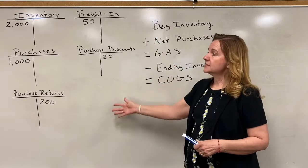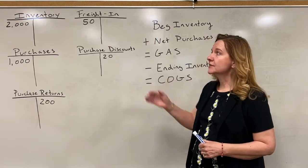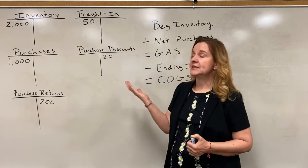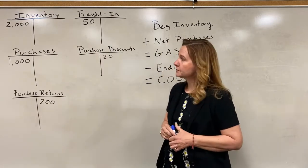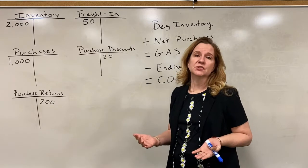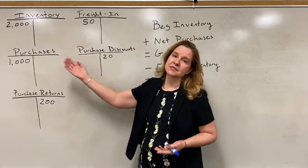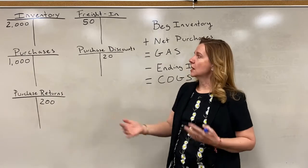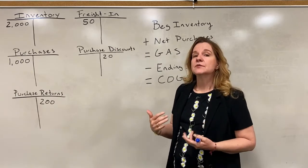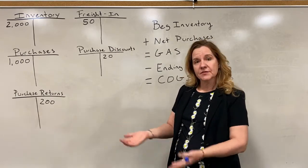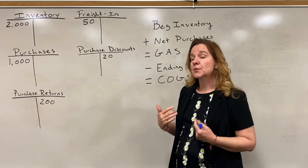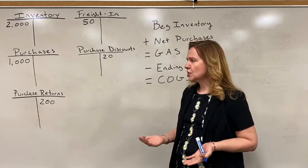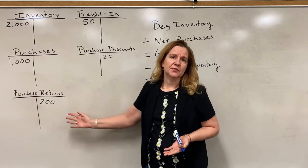We're going to look at a general ledger using T-accounts. We have an inventory account with a $2,000 balance — that's the beginning balance because it hasn't been adjusted. During the year when we're purchasing inventory, we put it to a purchases account. Freight goes to a freight account, as it's part of the cost of inventory coming in. We also have purchase discounts and purchase returns accounts specifically for those.